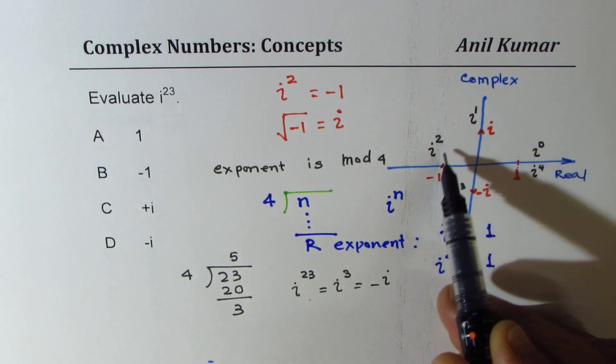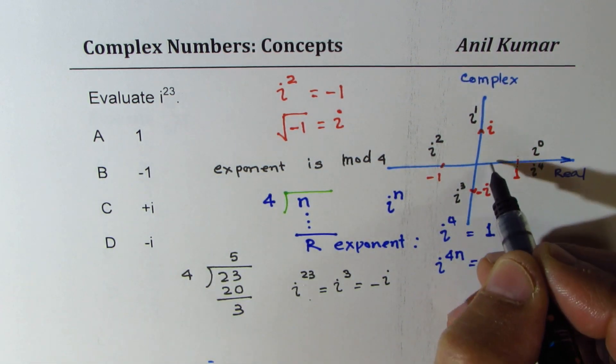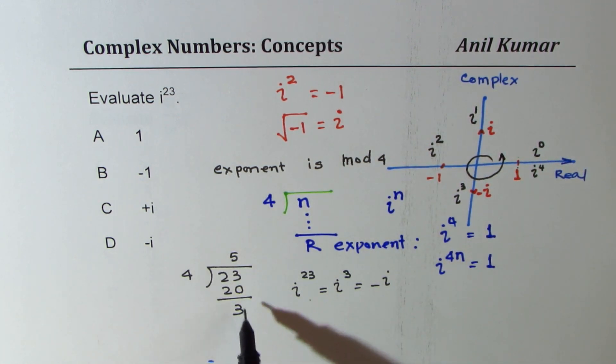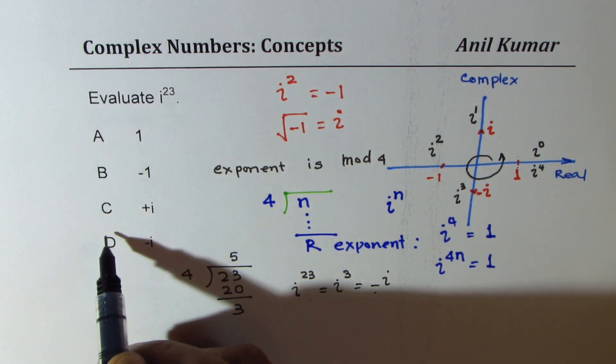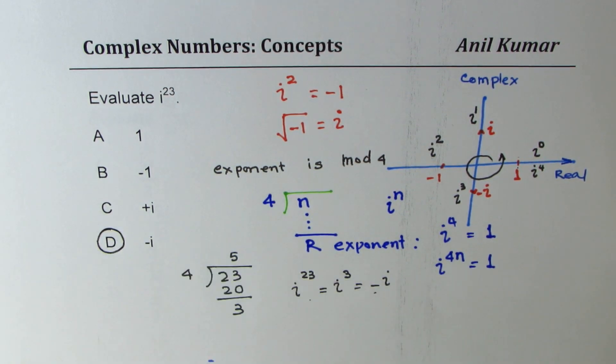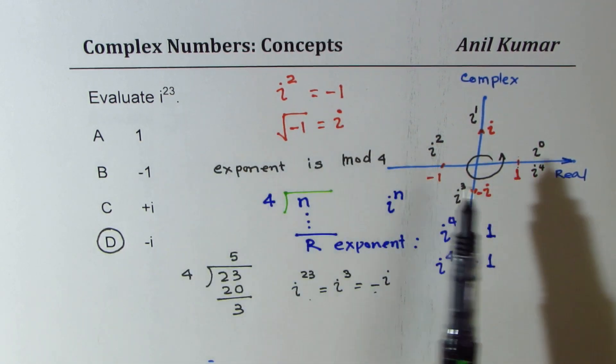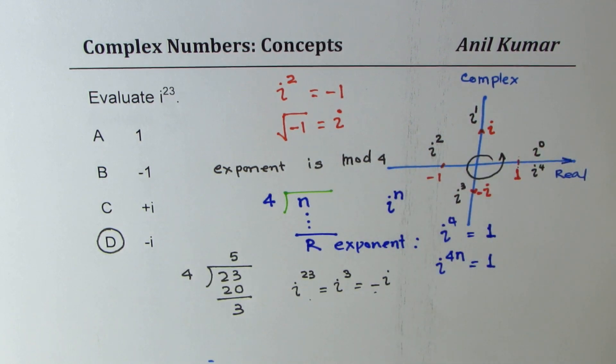For smaller numbers, you can count just as I did, going clockwise. So what we get here is minus i, option d is the right answer. Remember i to the power of 4n is 1, and that helps you reduce to the range 1 to 4 and use this table. Let's move on to the next question.